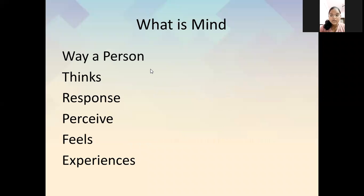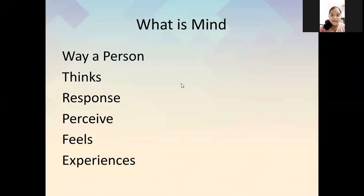Firstly, we will introduce the mind and its types. The definition of mind: the way a person thinks, responds, perceives, feels and experiences. The mind is the way in which a person thinks, responds, perceives, or feels in its present.